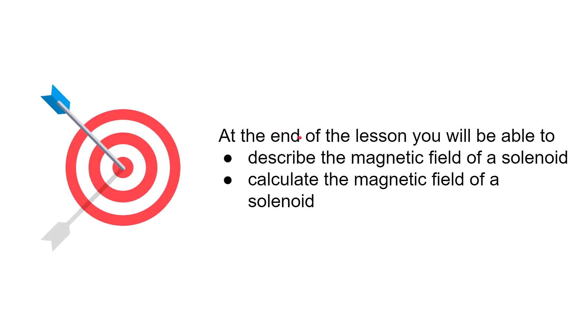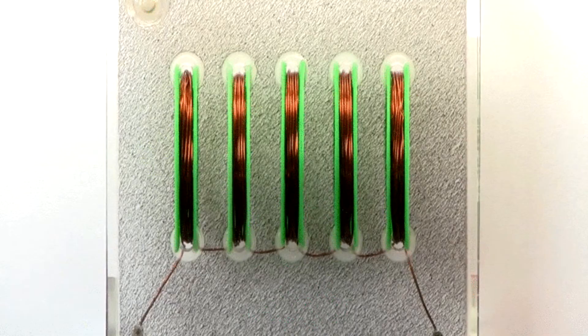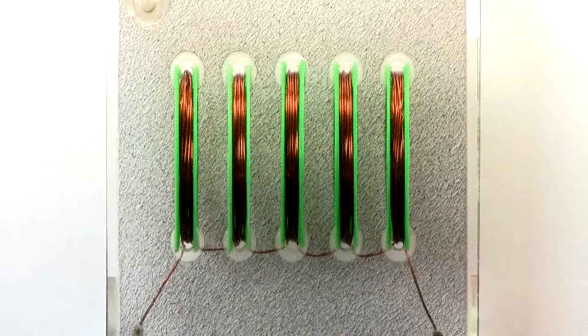This is the goal of the lesson. At the end you will be able to describe and calculate the magnetic field of a solenoid. Before we start, let's do a demonstration. We have five loops connected to each other instead of one.